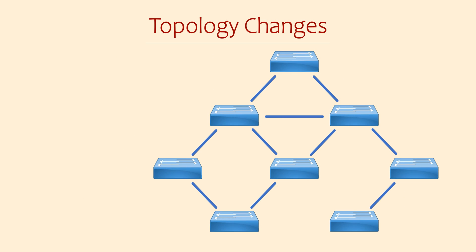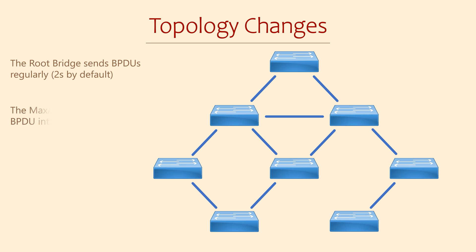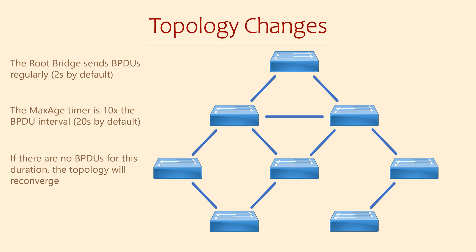We've got our nice new topology. Spanning Tree has learned where the root bridge is, learned the cost of each path, and knows which links to block. But what happens when the topology changes — perhaps links are added or removed, or there are hardware failures? The first thing Spanning Tree needs to do is detect these changes. One way it can determine that something has changed is if it doesn't receive BPDUs when it expects to. Each switch has a timer called the max age timer — this is 10 times the interval at which BPDUs are sent. By default BPDUs are sent every 2 seconds, so the default max age timer is 20 seconds. If BPDUs are missing on an interface for the duration of the max age timer, the switch knows there is a problem and will need to adjust the topology, meaning the Spanning Tree algorithm needs to run again.